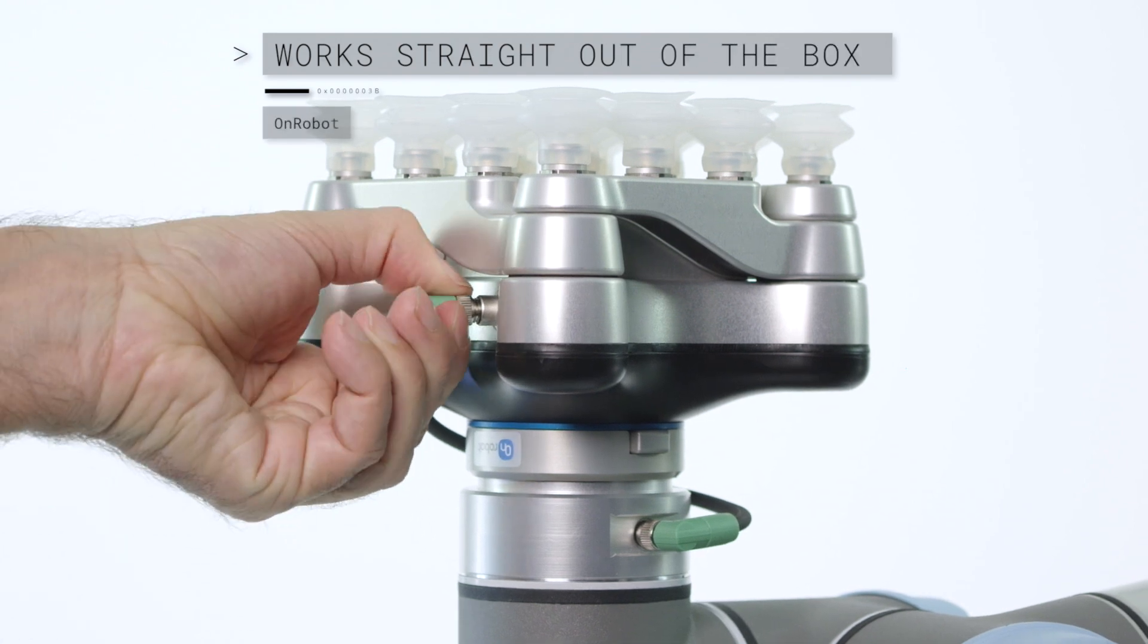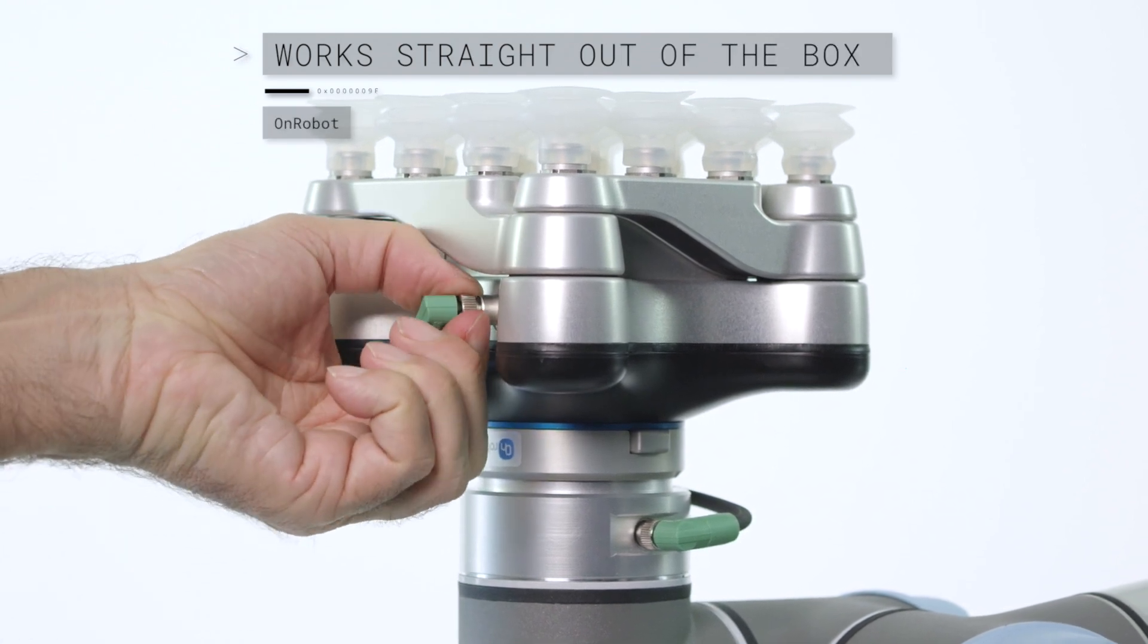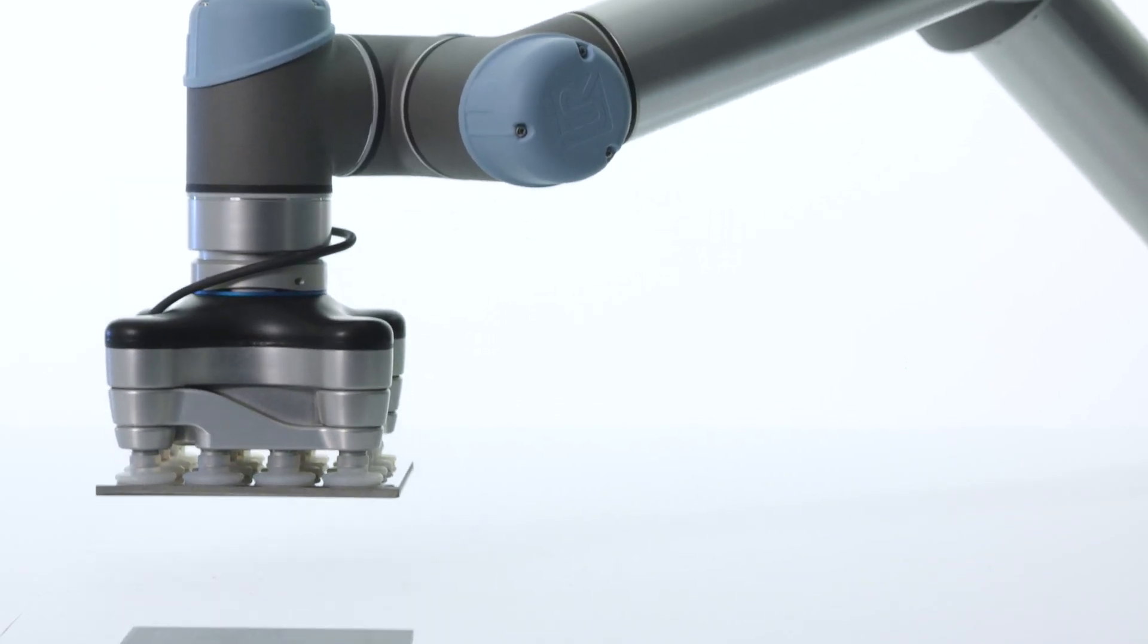Designed for collaborative robot applications, the VG10 is a plug-and-produce solution that works straight out of the box and onto your production line in less than 30 minutes.